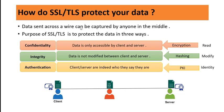Data sent across a wired network can be captured by anyone in the middle. As you can see here, the client is sending a file to the server, and a third party person can also see that data. SSL and TLS protect the data in three ways. First is confidentiality — data is only accessible by the client and server. No other third party can see or modify your data. This is achieved through encryption. Second is integrity — data is not modified between the client and server, for which we use hashing.